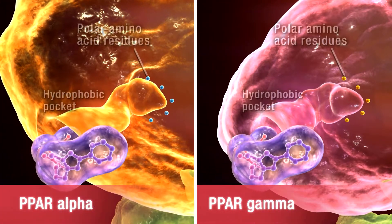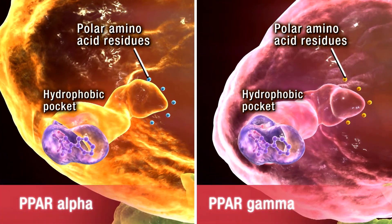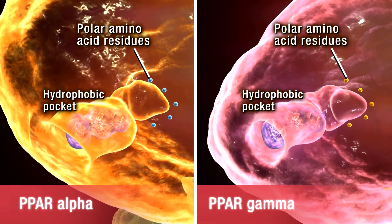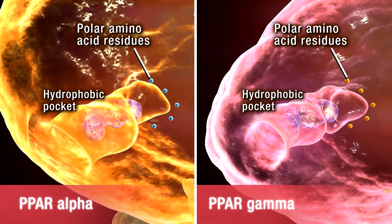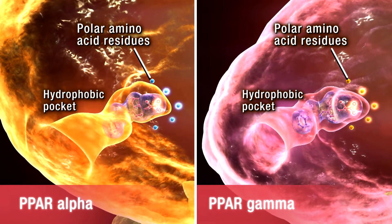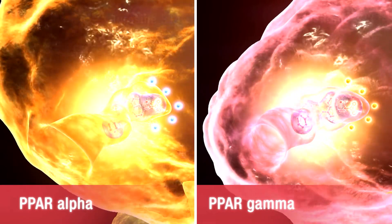When Alaglitazor enters this predominantly hydrophobic pocket, its head group interacts with polar amino acid residues lining the inner cavity and induces a conformational change that activates the receptor.